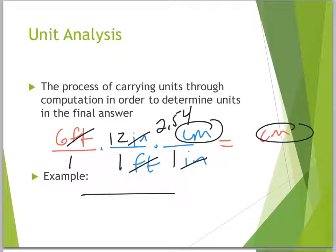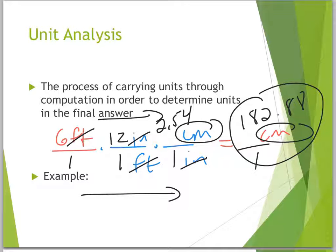So now we just multiply straight across top and bottom. On the bottom, 1 times 1 times 1 is 1. On the top, 6 times 12 times 2.54 is 182.88 centimeters. So unit analysis is the process of carrying the feet and centimeters all the way through, crossing out to make sure we have what we want in the end. You can do it with your units on top and bottom as well. See you next time.